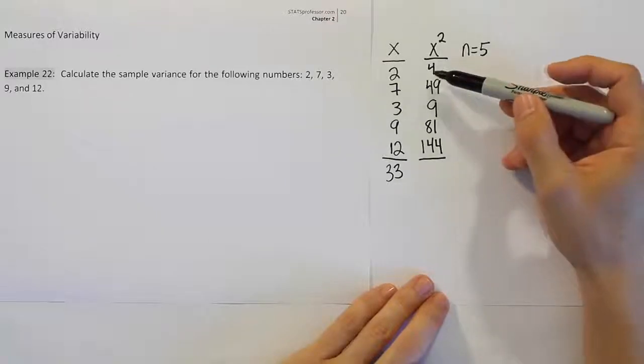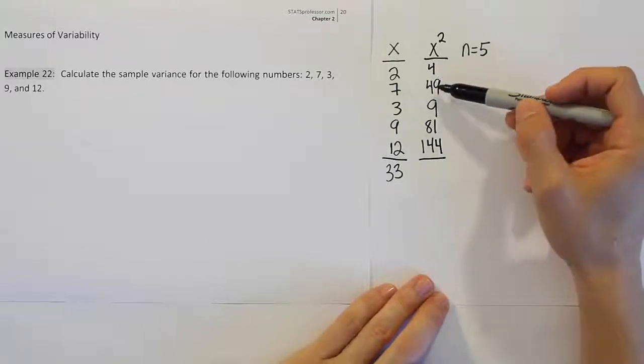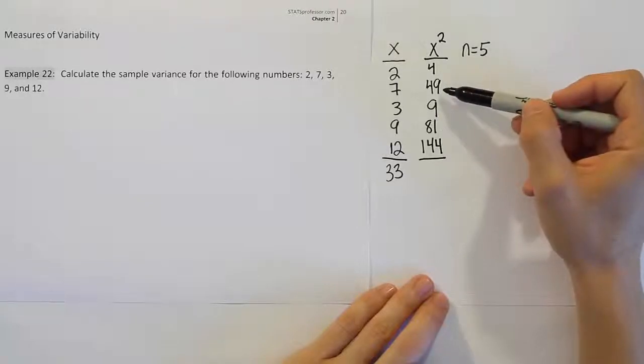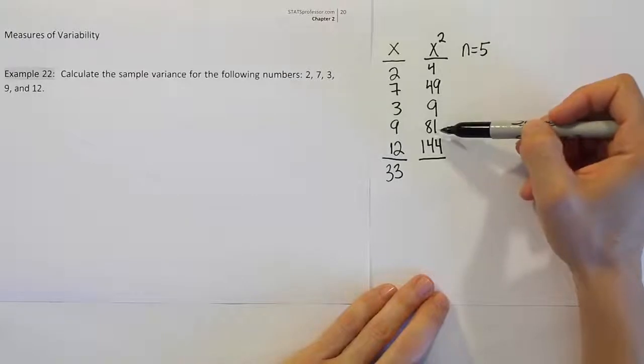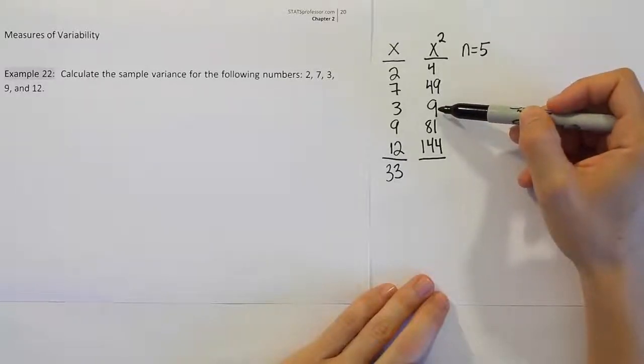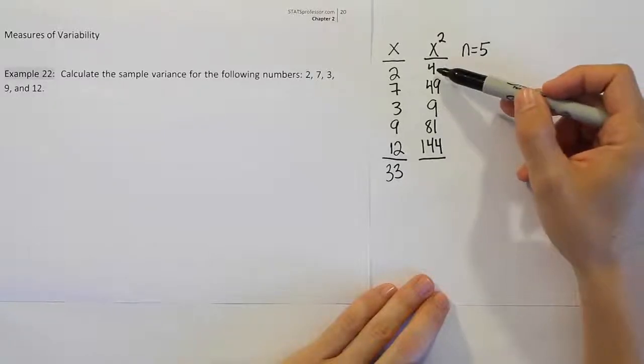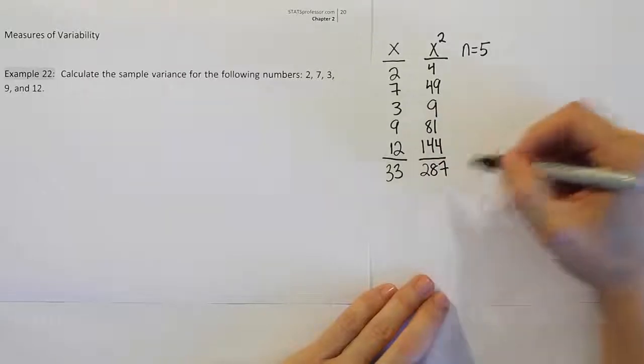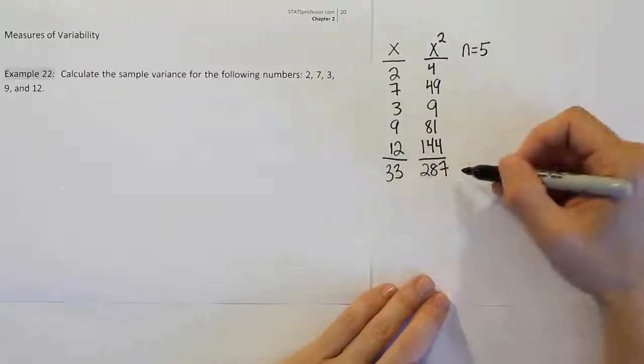After that, I'm going to add these values together. So we're going to have 81 and 49. That's going to make basically the same as 50 and 80, right? So that's 130. Then we'll have 130 added to 144. That's going to give us 274. And then finally, 274 and 9 makes 283. And then 287 if we add the 4.